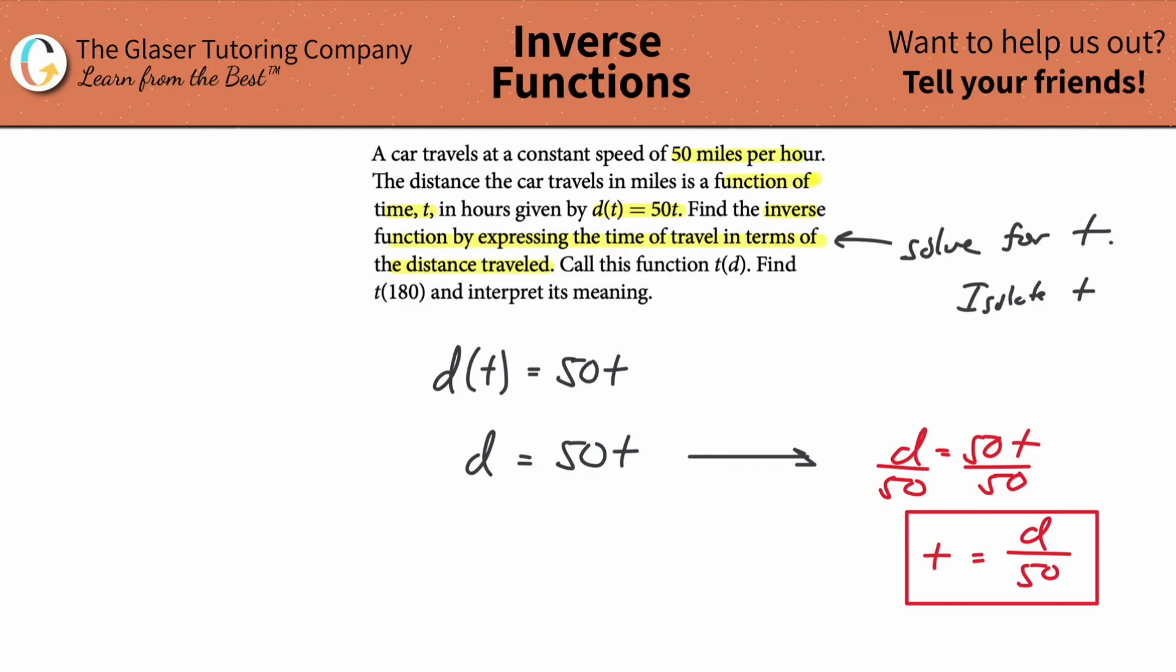Right, that's it. This is how simple it is. So here's the inverse function in red and here's the original function. Now they're saying just call this new function t(d). Okay great, so they want us to do a little t(d). All right fantastic. Now it says find t(180) and interpret its meaning.